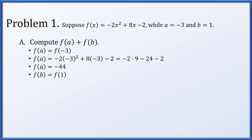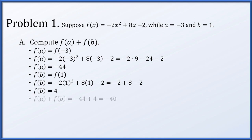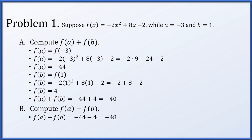f of b will be f of 1 because b is equal to 1. We plug 1 into f of x and get negative 2 times 1 squared plus 8 times 1 minus 2, which simplifies down to 4. Having computed f of a to be negative 44 and f of b to be 4, f of a plus f of b is negative 44 plus 4, which is negative 40. Similarly, f of a minus f of b is negative 44 minus 4, which is negative 48.